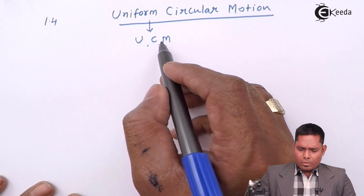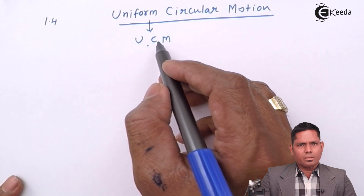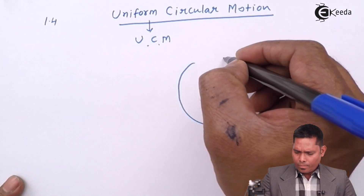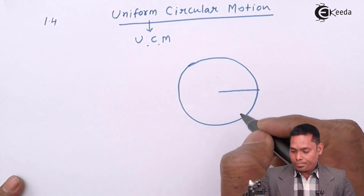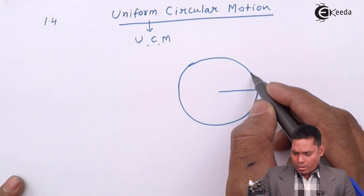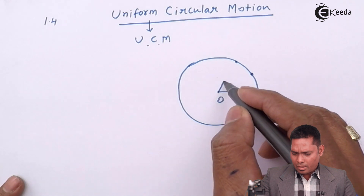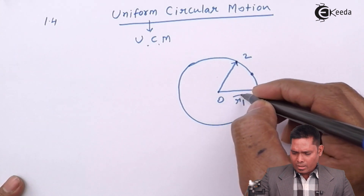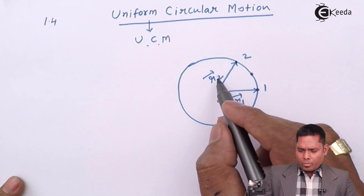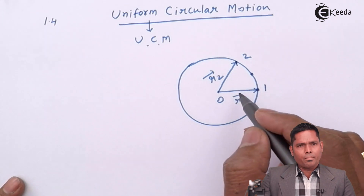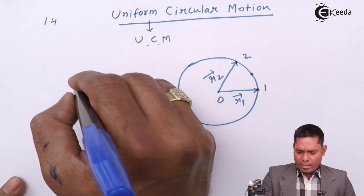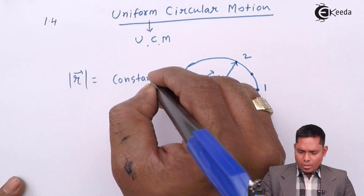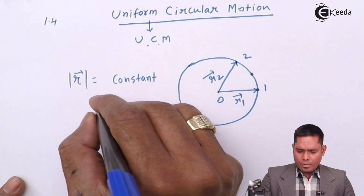We know that circular motion is defined such that the radius vector magnitude remains constant. If a particle moves in a circular path, it can be at any position. This is the center, and this is the radius vector. Suppose this is point 1 and point 2 — R1 vector and R2 vector. The directions are different, but the magnitudes are the same. So if the magnitude of the position vector is constant, this implies circular motion.